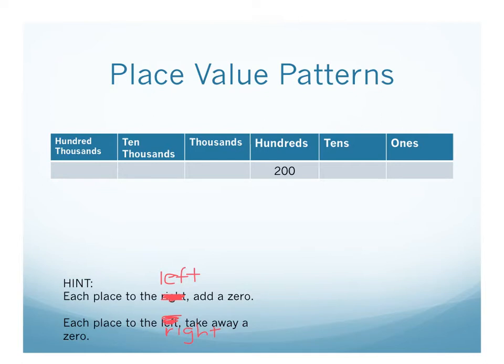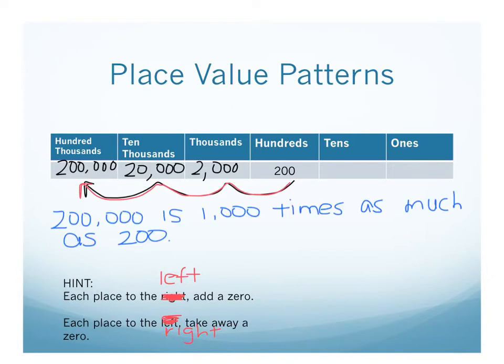So let's say we started with 200. What do you think the value would be if we moved three spaces to the left? Well think, every time you move to the left, you're adding a zero. So we would go from 200 to 2000, to 20,000, all the way to 200,000. So think, each jump is ten times as much. So, ten, a hundred, a thousand. So we can see that 200,000 is a thousand times as much as 200.